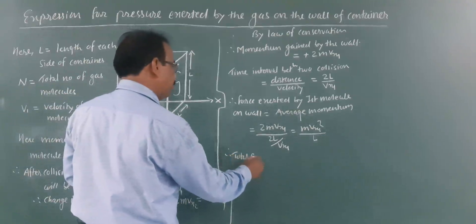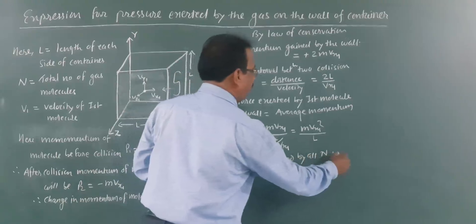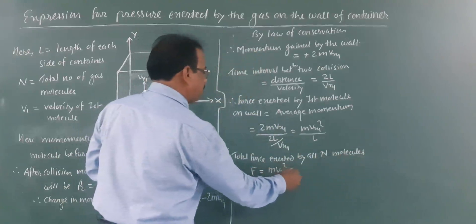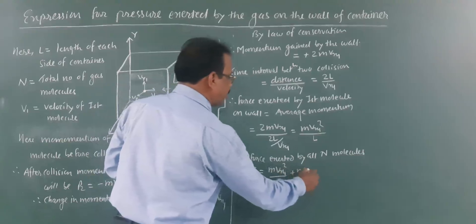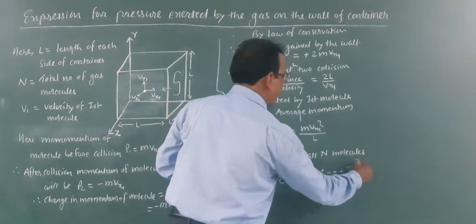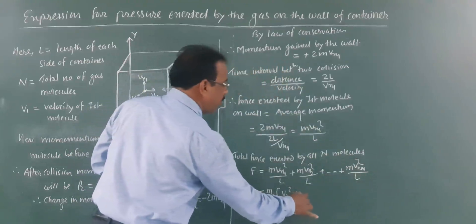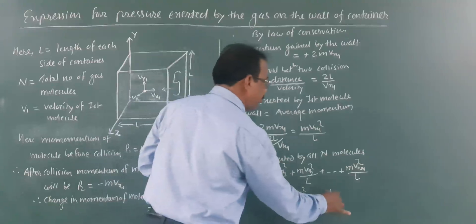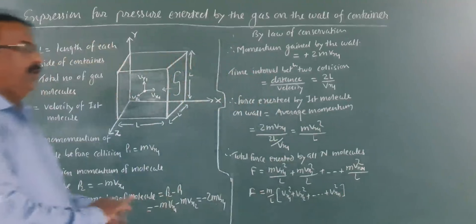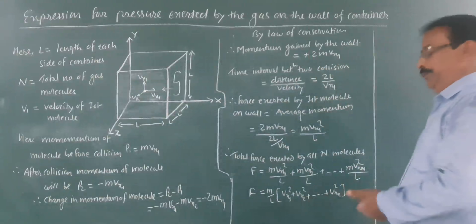The total force exerted by all N molecules equals F = (m/L)(Vx1² + Vx2² + ... + VxN²). Taking m/L as common, we get m/L multiplied by the sum of all Vx² terms. This sum divided by N is called the mean square velocity of the gas molecules for the X component, denoted Vx²bar.